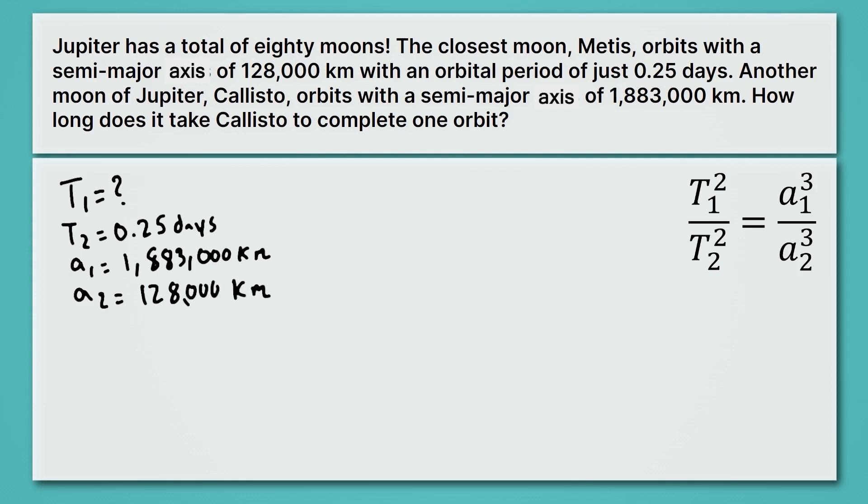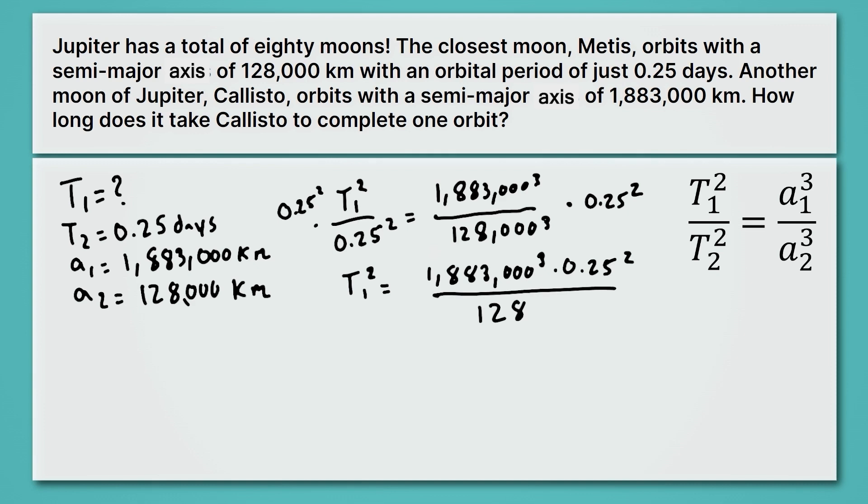Let's plug those numbers into our equation and solve for the orbital period of Callisto. So T1 is our unknown, and it's squared. And it's going to be divided by 0.25, that's T2, also squared. And it's equal to 1,883,000 kilometers cubed. So that's all cubed, and that's the semi-major axis of thing one, divided by the semi-major axis of thing two, which is 128,000 kilometers, also cubed. Okay, so to get T1 by itself, we're going to start by multiplying both sides by 0.25 squared. Okay, that gets T1 by itself, still squared though, and we have 1,883,000 kilometers cubed, times 0.25 squared, all over 128,000 cubed.